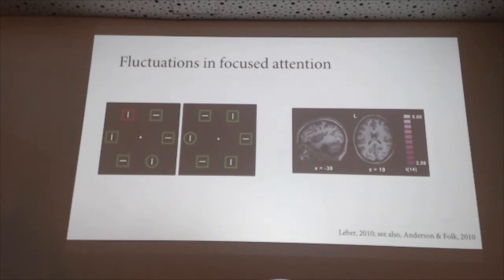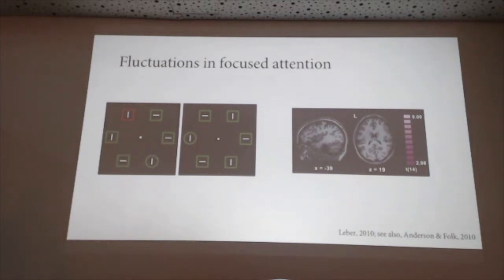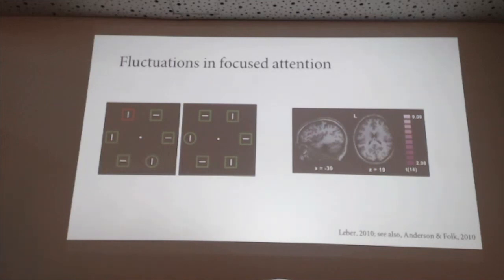A final clarification question: aren't variability and error rate the same thing — if you're more variable, isn't there a higher chance of error? The clarification is that the variability is measured on go trials, whereas the error is a commission error on a no-go trial. The variability before the trial of interest is what predicts whether you'll make an error on the next trial.